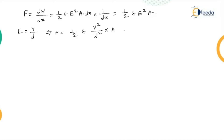Since the two plates are oppositely charged, there is always a force of attraction between the plates. This force of attraction is very important, and based on this, we are going to get the measurement of AC high voltage. This force of attraction basically decides the operation of this electrostatic voltmeter.